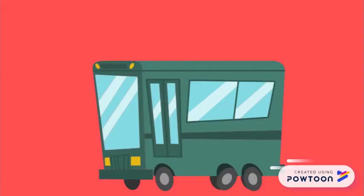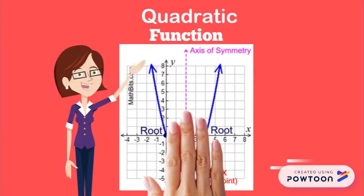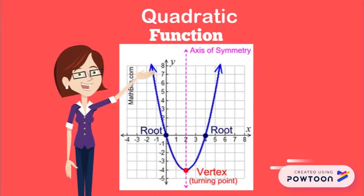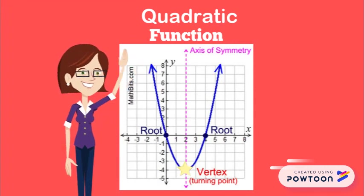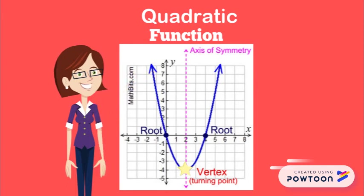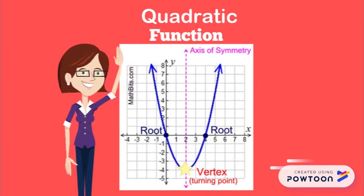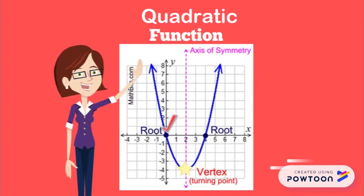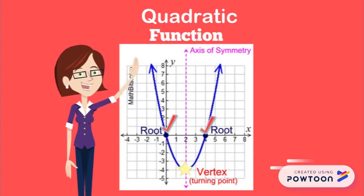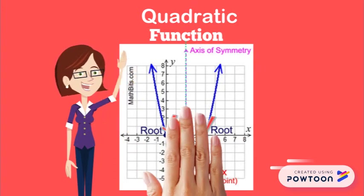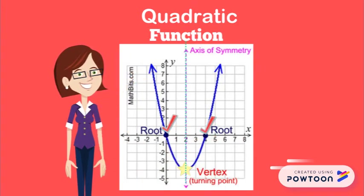The quadratic function is a parabola. It can either have a minimum vertex or a maximum vertex. It also can have 0, 1, or 2 X-intercepts, which are also called roots, zeros, or solutions. Lastly, it has the axis of symmetry, which is a vertical line that goes through the vertex.